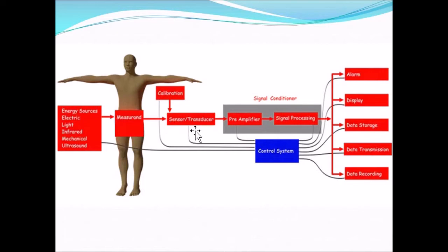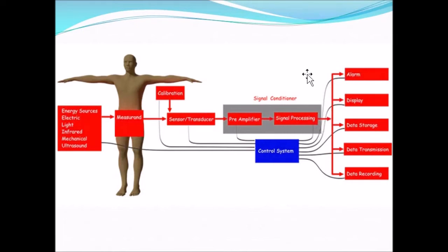Next are transducers and sensors. Their role is to pick up the electrical signal, which is very low in amplitude and wide in frequency range. That value is sent to the preamplifiers, that is the signal conditioner. The signal conditioner performs signal amplification and signal processing. Finally, from the signal conditioner, the output is given to the alarm system, display system, data storage, data transmission, and data recording.